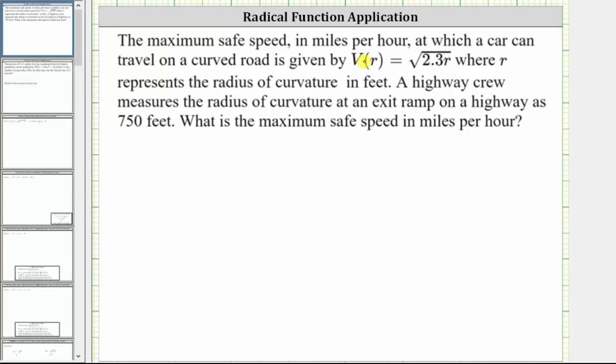Well, the maximum safe speed is going to be v(750) because 750 is the radius of curvature, which means to determine the maximum safe speed, we substitute 750 for r.